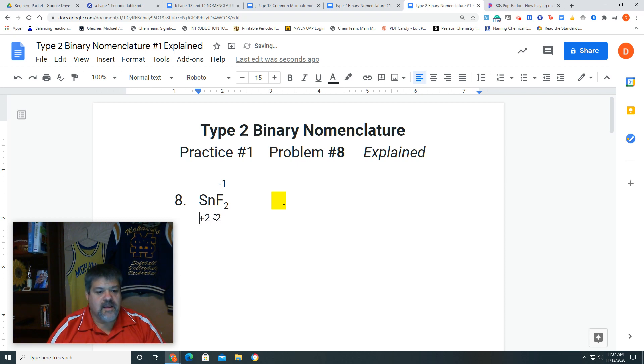Why does this have to be? Because the total charges must cancel each other out. If they don't, the compound isn't stable and will change into something else. Since this is stable, we take the +2 and divide it by tin's subscript, which is one. So 2 divided by 1 equals +2.